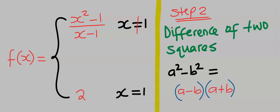Here, we are going to apply difference of two squares, which states that a squared minus b squared is equal to a minus b in bracket, a plus b in bracket.